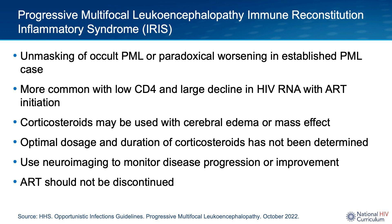The second type involves patients with a known diagnosis of PML who are started on antiretroviral therapy and then exhibit a paradoxical worsening of symptoms with immune reconstitution. PML-IRIS is more common in patients with a very low CD4 count who have a large decline in their HIV viral load with ART initiation.